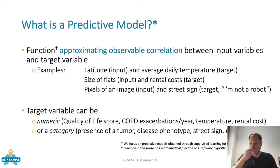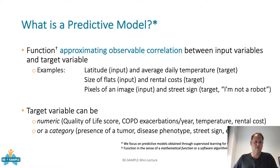So what actually is a predictive model? A predictive model is a function — in the mathematical or engineering sense — a mathematical function or software algorithm that is approximating observable correlations between the input variables of your domain and some given target variable.